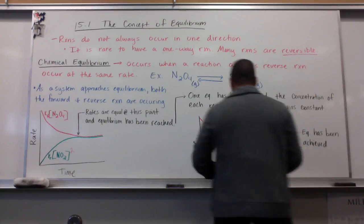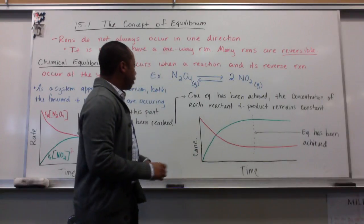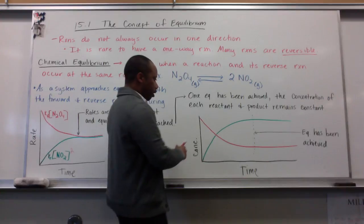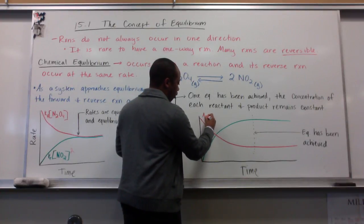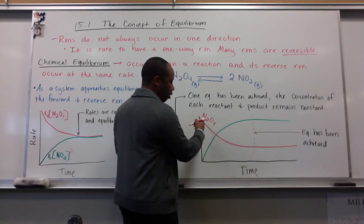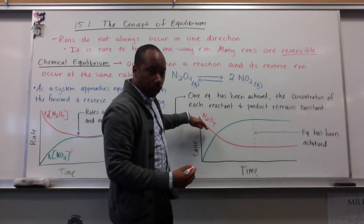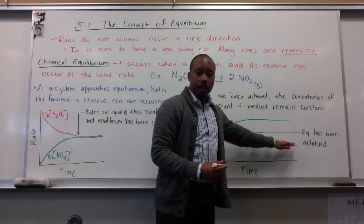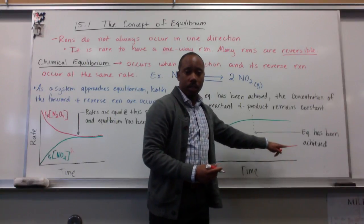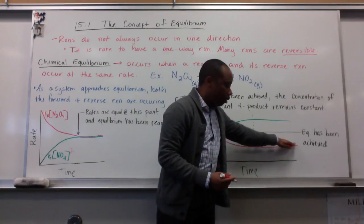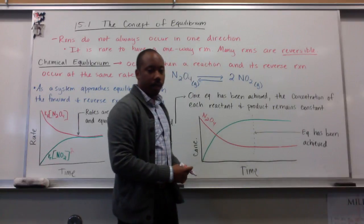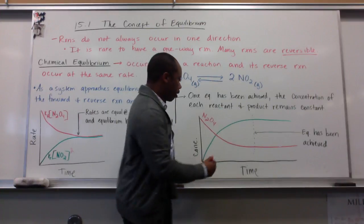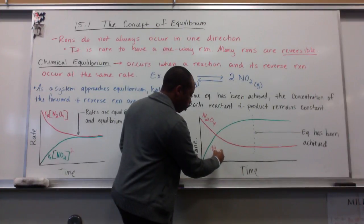For example, in this diagram here, my reactant started out with a high concentration. This is N2O4. As it reacted, the concentration decreases, because I'm using up a lot of those reactants. And it mellows out, or plateaus there. My concentration of my product, the NO2, started from zero...